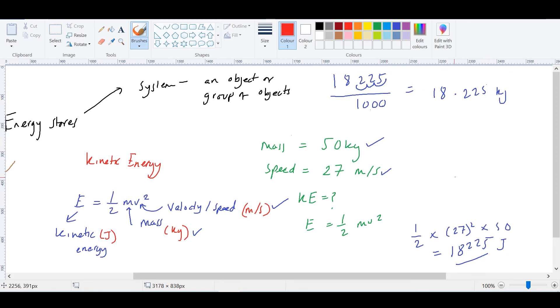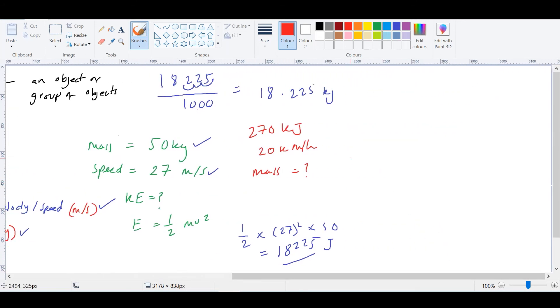Let's explore another way that this formula can be used. So this time, let's say in a system, energy exerted is 270 kilojoules, and the object was traveling at 20 kilometers per hour. And I'd like you to find out the mass of the object. So can you see it's a little more complicated now?